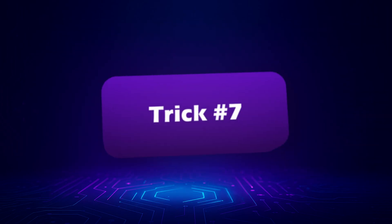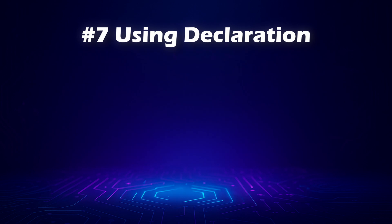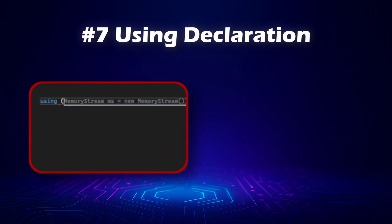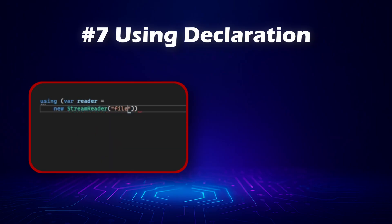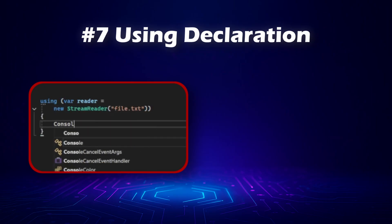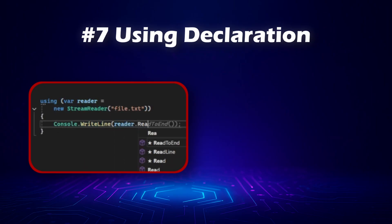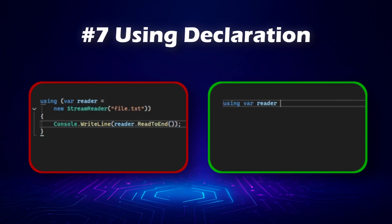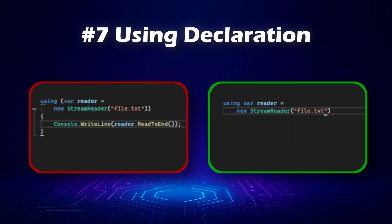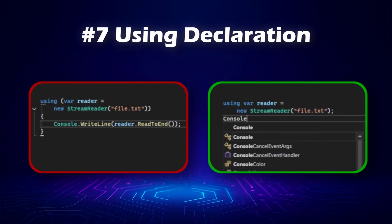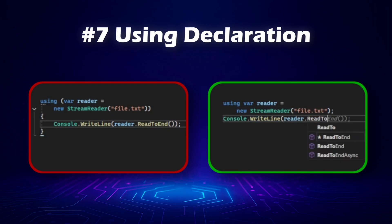Let's move on to trick 7: the using declaration. Here's the classic way to work with a StreamReader, for example. It works perfectly, but notice the extra braces and the indentation. For multiple disposables, this can get messy very quickly. Therefore, I would recommend this version with the using declaration. This is much cleaner — no extra braces, and the reader is automatically disposed at the end of the scope.